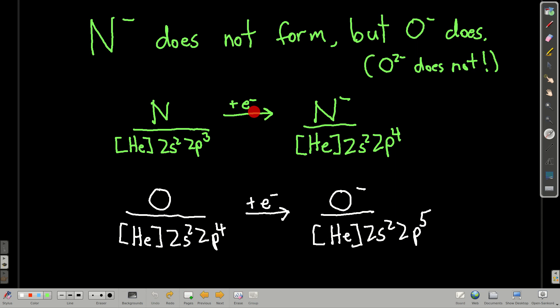When we add an electron, which is what we do with electron affinity, we get the nitrogen minus one anion, and its electron configuration is helium 2s² 2p⁴. A couple things are going on here. First, nitrogen in its ground state has a half-full 2p subshell. Remember, there's a little extra stability associated with that. By adding this extra electron, we break that stability, so it makes it a little harder to do.